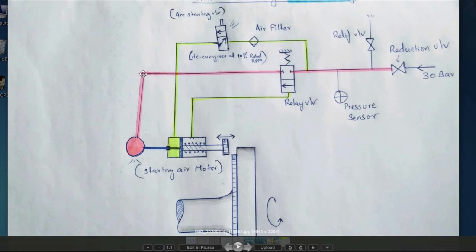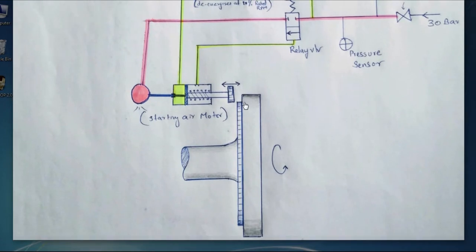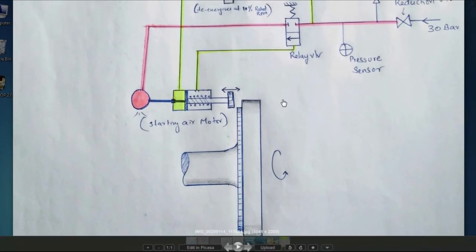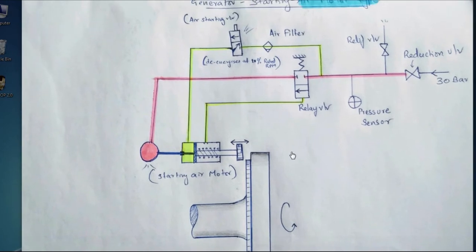the air passes to the starting air motor. Then it gets started. And now this will start rotate. So this is how we are starting generator by using air.